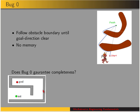Does bug zero guarantee completeness? That means if there is a solution or a path to the goal, does bug zero guarantee that the robot will find it? Here's an example to consider, and you should think through whether or not bug zero guarantees completeness.